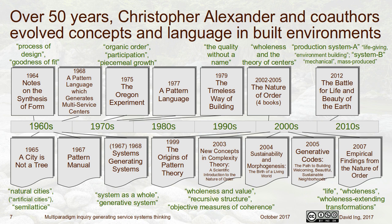Looking at Christopher Alexander over 50 years: in 1964 he writes Notes on the Synthesis of Form, using terms like 'process of design' and 'goodness of things.' In 1965, the city paper on natural versus artificial cities comes out. In 1968, what he writes reflects what he knew at that point in time — he's evolving as a scientist throughout this period.